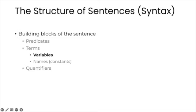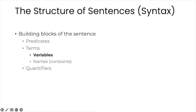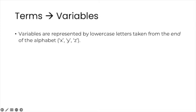Now let's talk briefly about the other kind of term, the variable. Variables are represented by lowercase letters taken from the end of the alphabet, such as X, Y, Z. Whereas a name can only take one value in a given interpretation, a variable can take many. But we'll see this in more detail when we talk about semantics.